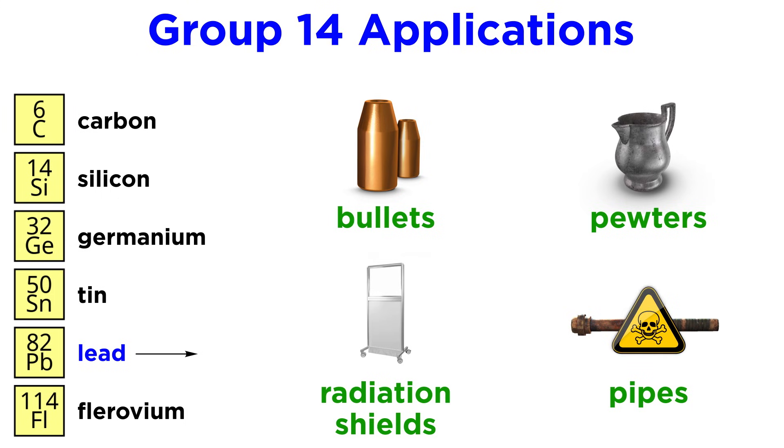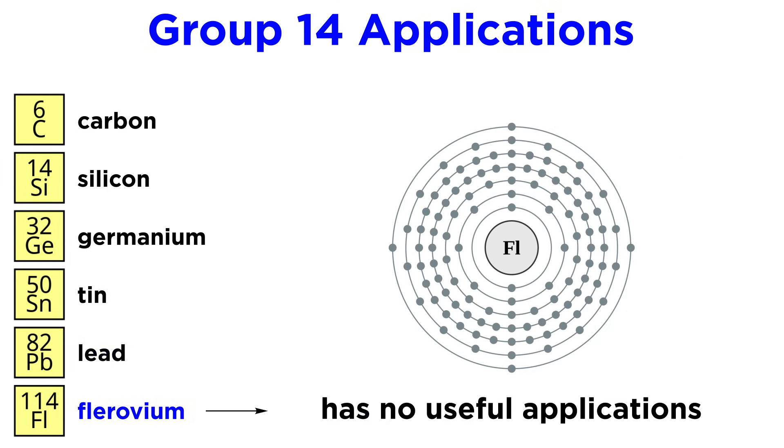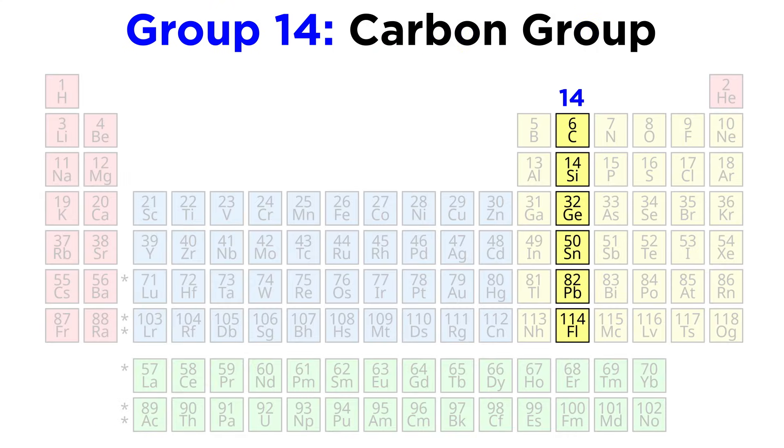Though some corrosion does occur, which is why lead pipes are no longer advisable for carrying drinking water due to the potential danger of lead poisoning. And as we mentioned, flerovium has no useful applications due to its extremely short half-life. And with that, we wrap up another group from the periodic table.